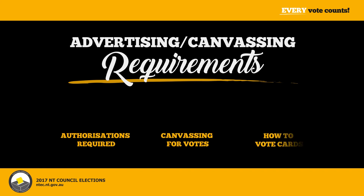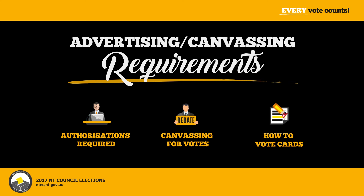Advertising and canvassing requirements: Campaign material used to promote a candidate must contain the name and address of the person authorising the advertisement. If the material has been printed, the name and physical address of the printer must also be included. Canvassing for votes at a voting centre must be 10 metres or more from the designated entrance.